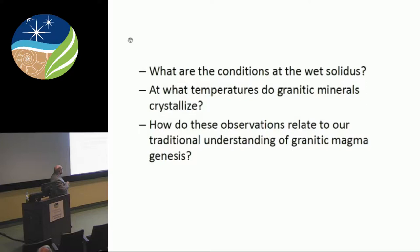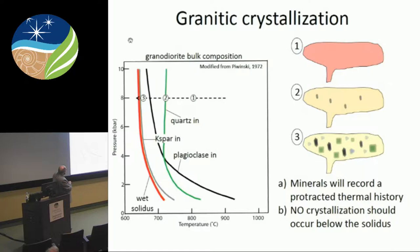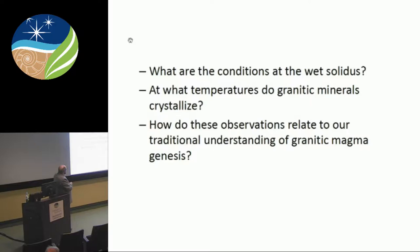The main question I'm going to try to answer is: what are the conditions at the wet solidus? What I'm trying to figure out is the conditions at these very late stages of melt — what are the temperatures and pressures at which these rocks form at the very last stages? And naturally following that: at what temperatures do granitic minerals crystallize? I'm going to come up with some results that are atypical, and I'll try to explain them.